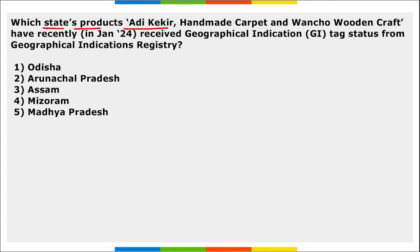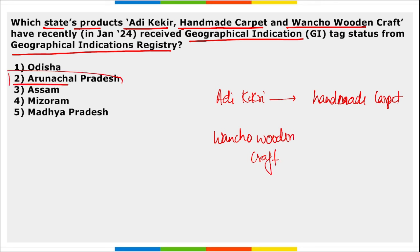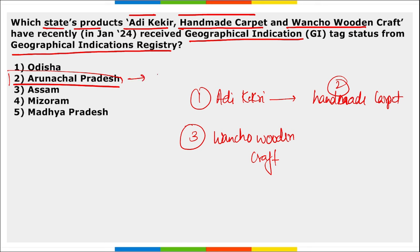Next: which state's products — Adi Kekri (handmade carpet) and Bench of Wooden Craft — recently received GI tags from the Geographical Indication Registry? These products are from Arunachal Pradesh. With the addition of these three products — Adi Kekri handmade carpet and Bench of Wooden Craft — the total number of GI-tagged products in Arunachal Pradesh is now eight.